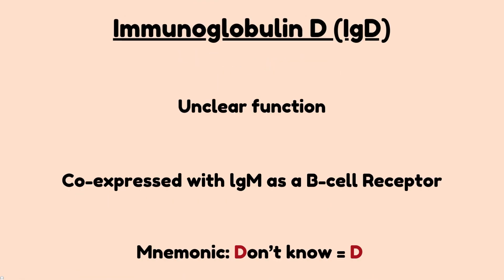Lastly is immunoglobulin D, which has an unclear function. The only thing you need to remember is that it is co-expressed with IgM as a B cell receptor, meaning it works with IgM. To remember this immunoglobulin, use the phrase 'don't know' — referring to not knowing the function of this type. The first letter of 'don't' is D, and D stands for immunoglobulin D.